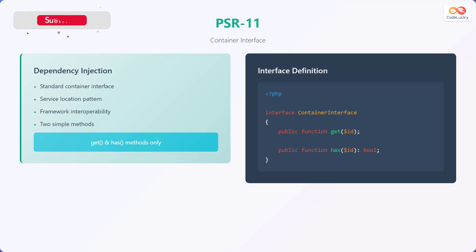Let's explore PSR11, which is the container interface. This standard focuses on dependency injection by providing a standard container interface, facilitating the service location pattern, and ensuring framework interoperability. It defines only two simple methods — get and has — for retrieving and checking the existence of services within the container. The get method accepts a string ID, and the has method also accepts a string ID and returns a Boolean value indicating whether the container has the specified service.